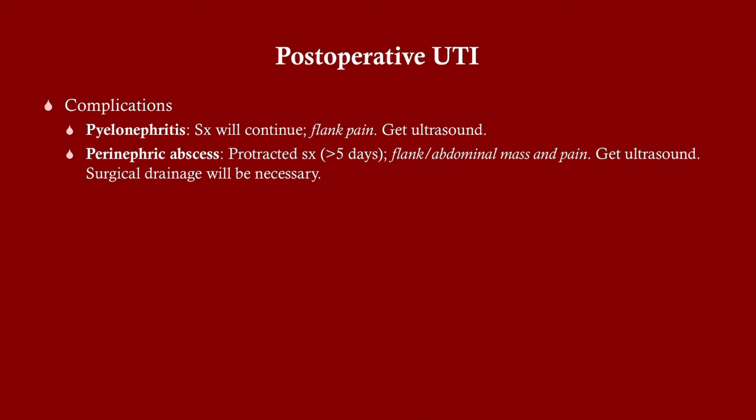Complications to watch for: pyelonephritis — if they start having flank pain under their ribs, that's a hint. It can be difficult to distinguish from cystitis; ultrasound sometimes tells you but usually doesn't. With pyelonephritis, we treat it pretty much the same way as a complicated UTI, so on your exam you'll treat it the same. On the other hand, if you have a perinephric abscess — you feel a mass, the fever doesn't go away with antibiotics — get an ultrasound, find the abscess, call surgery, have it drained, and continue antibiotics.